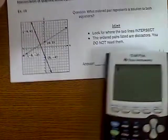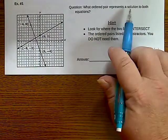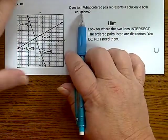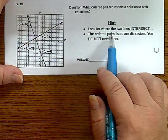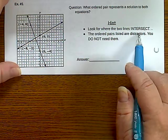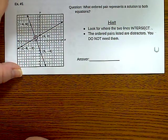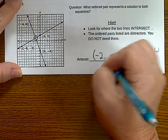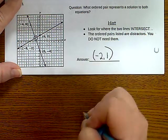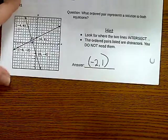Intersection of graphed lines. So here's a question. What ordered pair represents a solution to both equations? Look where the two lines intersect. What does intersect mean? Cross. The ordered pairs listed are distractors. You do not need to read them. All you need to know is this point right here. So you are looking for an answer which a point where they cross is negative two, positive one. And so that is your answers. Let's flip the page.